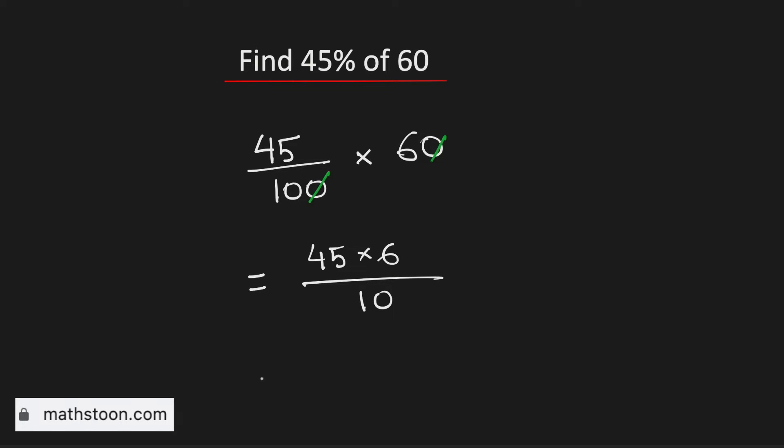Now if we multiply the numerator then we get 270. And we have 10 in the denominator. So when we divide it by 10 we get 27. Therefore 45% of 60 is equal to 27.